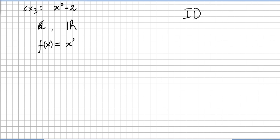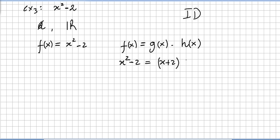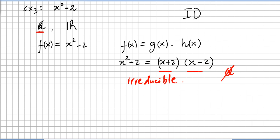So f(x) equals x squared minus 2. We can factor x squared minus 2 as (x + √2)(x − √2). Let us check if it is reducible or irreducible over the rational numbers. Over the rational numbers, one of these factors is a unit because it is invertible, so we can say that x squared minus 2 is irreducible over the rational numbers.